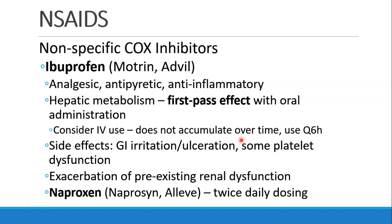Moving on to other NSAIDs: ibuprofen, also called Motrin or Advil, is analgesic, antipyretic, and anti-inflammatory. It's metabolized in the liver with a first-pass effect when given orally and is also available IV. It doesn't accumulate over time and can be given every six hours. Side effects include GI irritation, ulceration, some platelet dysfunction, and it can exacerbate pre-existing renal dysfunction due to decreased renal blood flow. Naproxen, also called Aleve, is similar to ibuprofen but with twice-daily dosing instead of every six to eight hours.